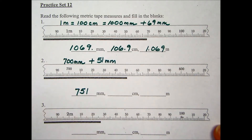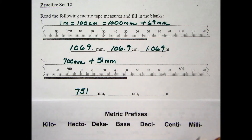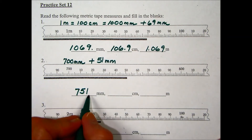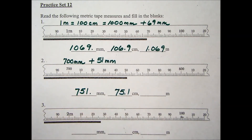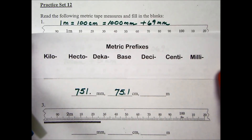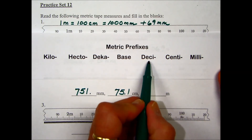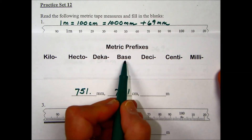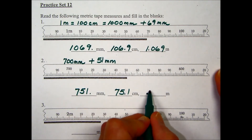Similar to the previous problem, we convert 751 millimeters into centimeters by moving the decimal one place to the left, since these prefixes are right next to one another. That gives us 75.1 centimeters. Then from centimeters to meters, two decimal places to the left gives a value of 0.751 meters.